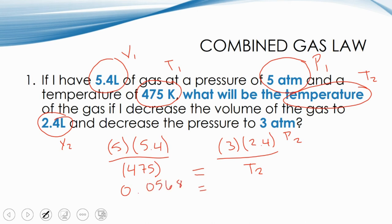And that would equal to, and I'm also going to simplify the top of the fraction. So the 3 times 2.4. Because I want to be dealing with as little quantity of numbers as I can. So this is what we have. 0.0568 equals to 7.2 divided by T₂.